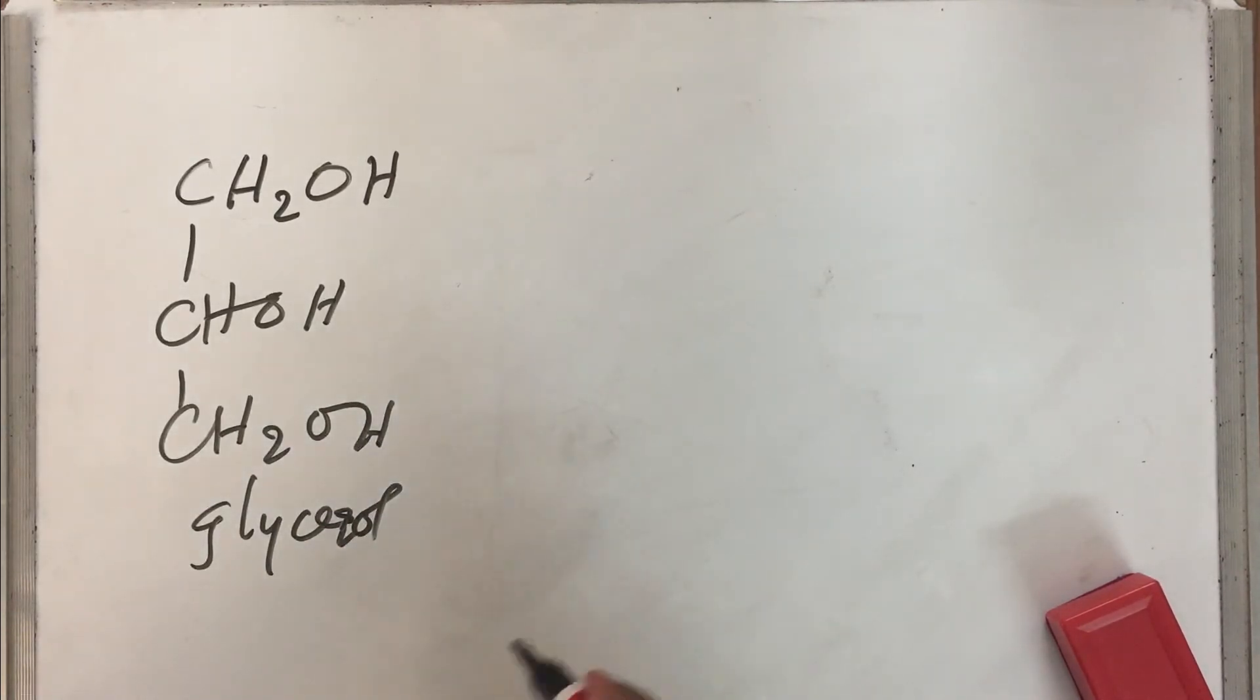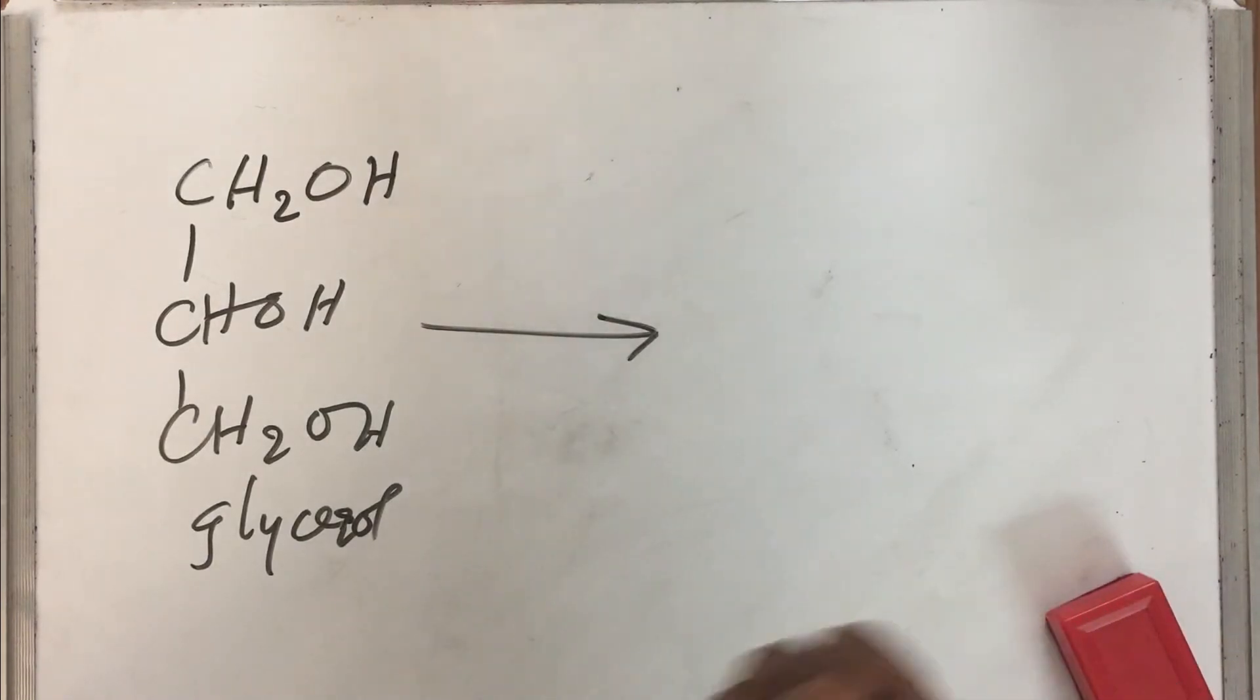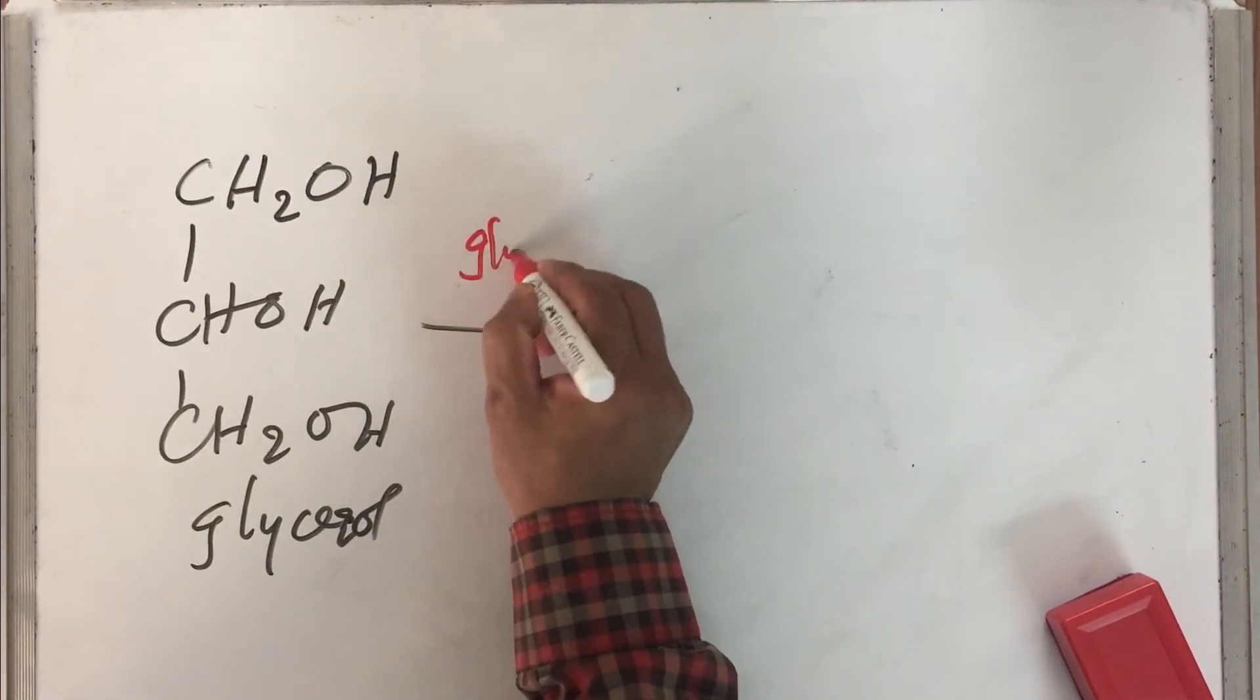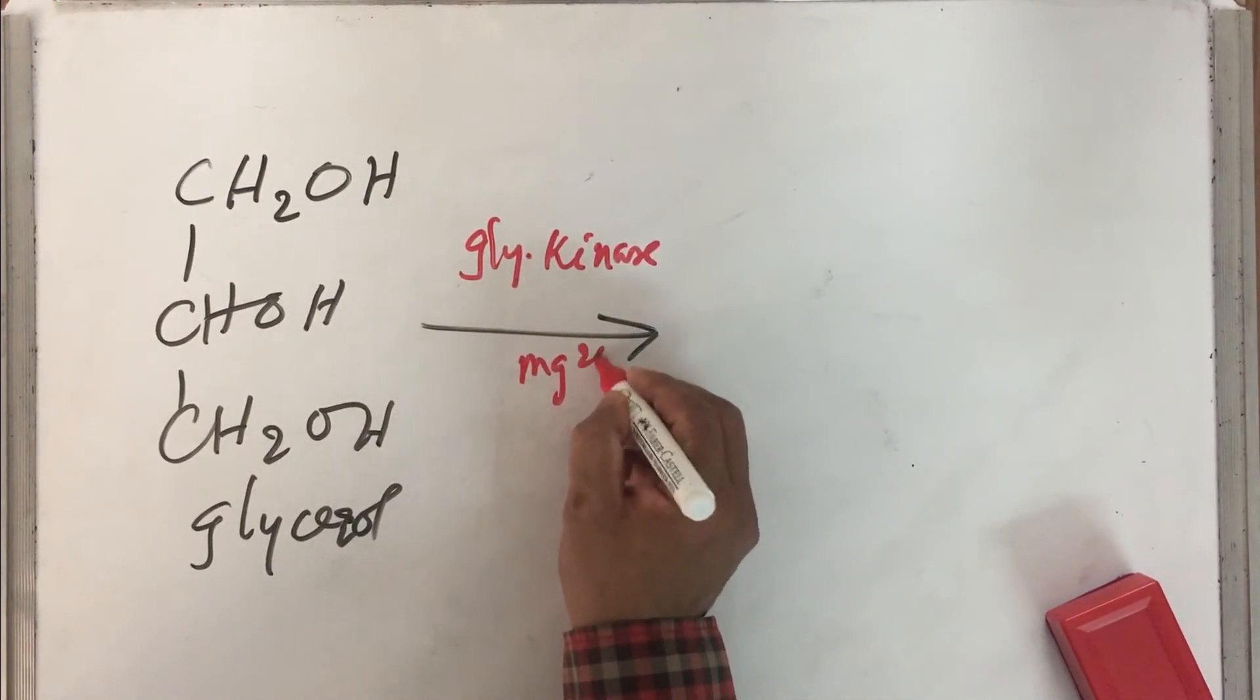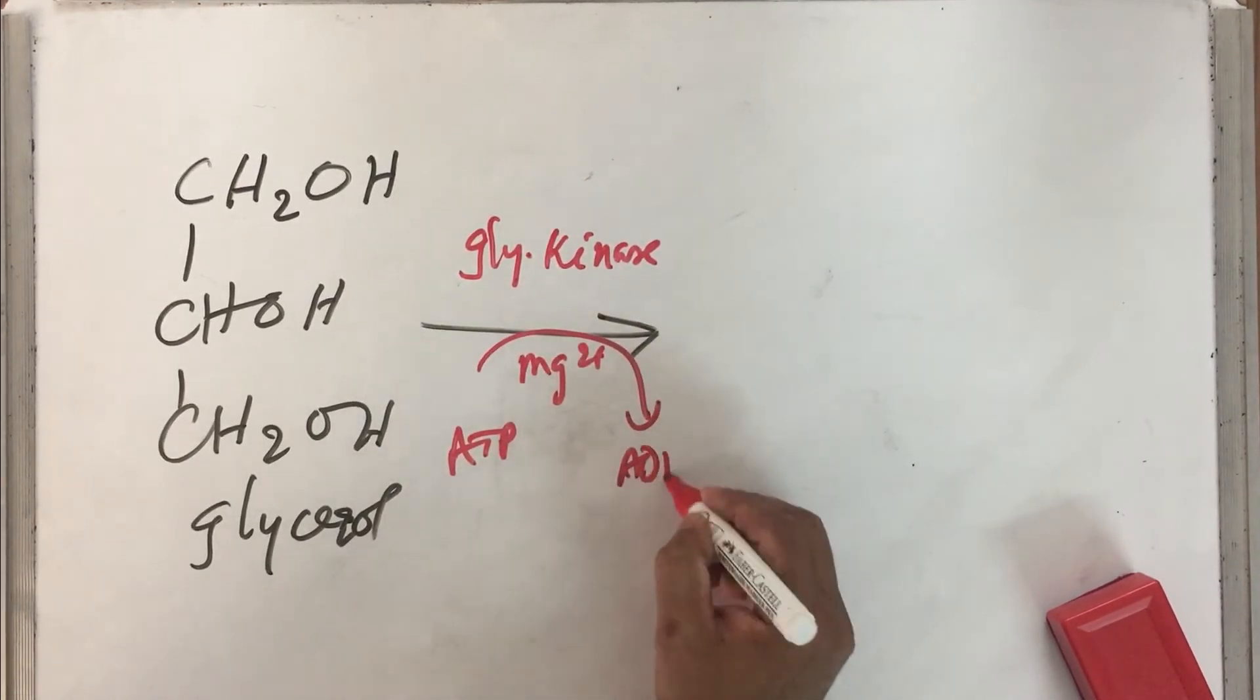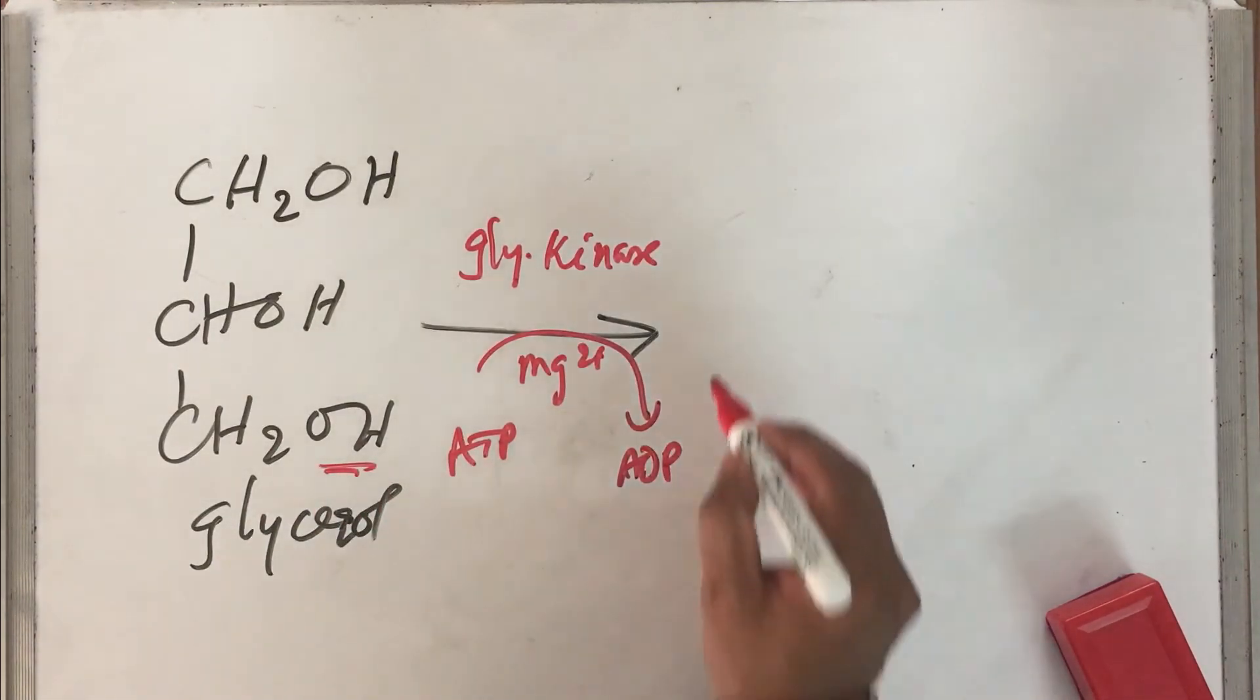Now this glycerol is coming from triacyl glycerol metabolism. The free fatty acids are removed and only the glycerol is staying back. This glycerol is acted upon by an enzyme known as glycerol kinase. Remember, kinase enzyme requires Mg2+. ATP is broken down to ADP, so therefore inorganic phosphate gets attached to the third position, so you will have glycerol 3-phosphate.